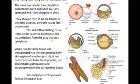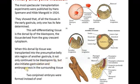The tissue is derived from the gray crescent of the cytoplasm, as I mentioned in the first class. When this dorsal lip tissue was transplanted into a presumptive belly skin region of another gastrula, it not only continued to be a blastopore lip, but also initiated gastrulation and embryogenesis in the surrounding tissue. This means the self-differentiating tissue can give rise to a complete organ, as seen in the previous lecture. Two conjoint embryos were formed instead of one.